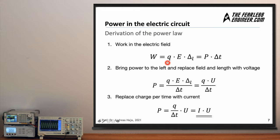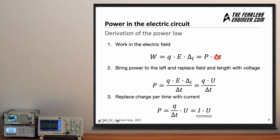Let's derive the power law — P equals current times voltage. In the first step, we start with work in the electric field. The work performed on, say, an electron within the electric field is the product of the charge q, the electric field strength, and the length delta-l over which the charge moves. This product can also be expressed as power times the amount of time delta-t — which comes directly from the equation P = W/t that we discussed with the basket of apples.